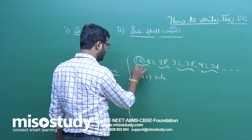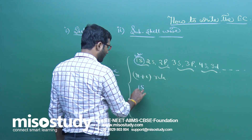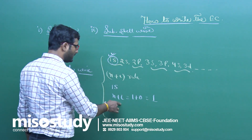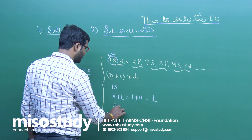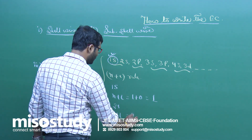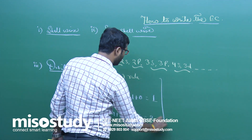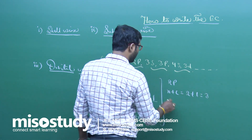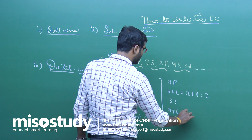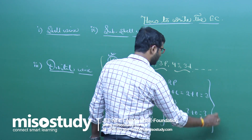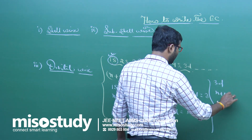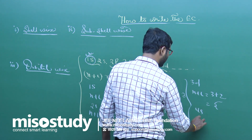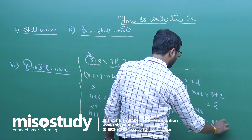For example, for 1s: n+l = 1+0 = 1. For 2s: n+l = 2+0 = 2. For 2p: n+l = 2+1 = 3. For 3s: n+l = 3+0 = 3. For 3d: n+l = 3+2 = 5. For 4s: n+l = 4+0 = 4.